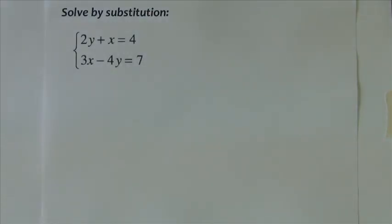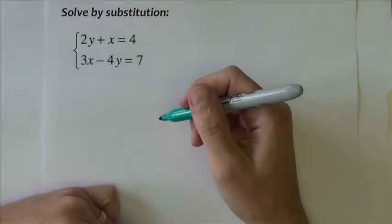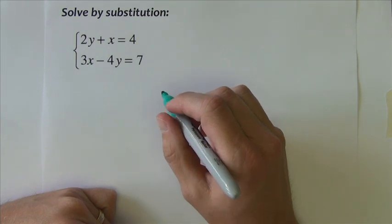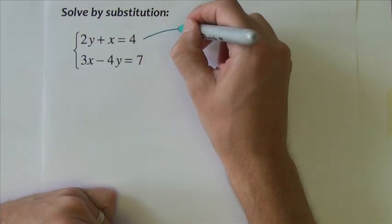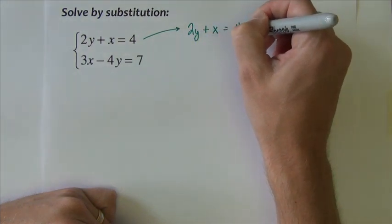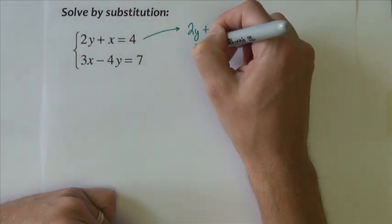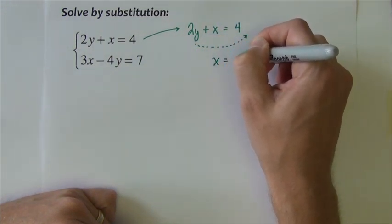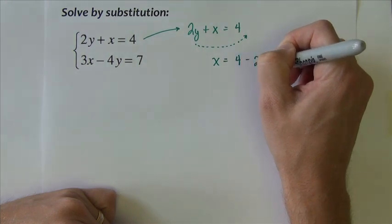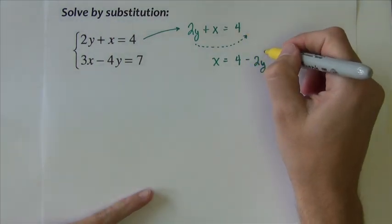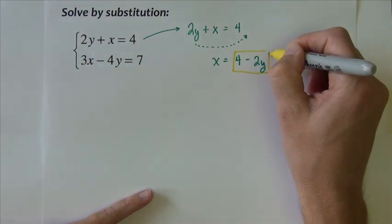In this particular problem, the same direction, solve by substitution. A little different than the last one in that we don't have an equation that says x equals or y equals, but this equation can be made into x equals very easily. I just need to take this 2y and place it over here. So x equals 4 minus 2y.